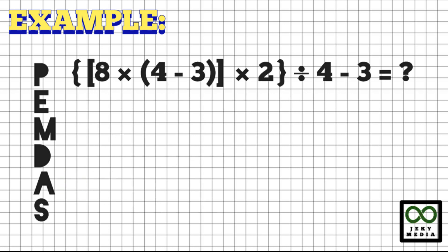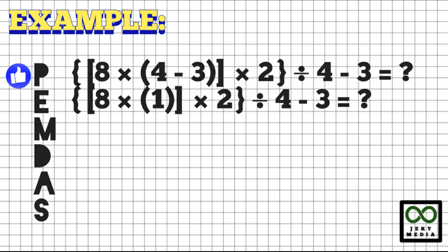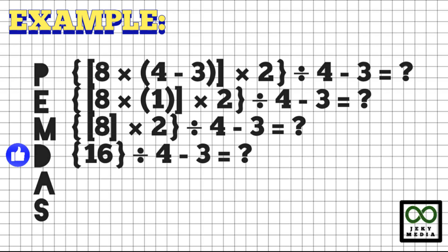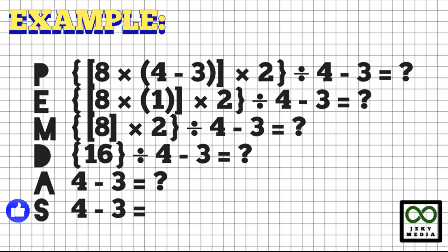Let's have this one: a quantity inside a brace, and inside the brace is a bracket — 8 times a quantity inside a parenthesis, 4 minus 3. This quantity inside the bracket is multiplied by 2. The quantity inside the brace is then divided by 4, minus 3. Start with the parenthesis: copy 8, 4 minus 3 is 1. Multiply 8 and 1 — we have 8. Still inside the grouping, multiply 8 and 2 inside the braces — we have 16. Division and subtraction are left. 16 divided by 4 is 4. Copy minus 3. 4 minus 3 is 1.